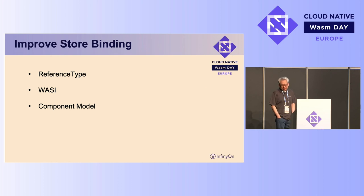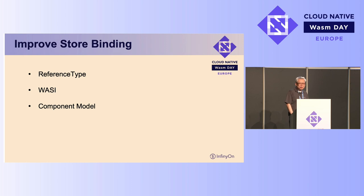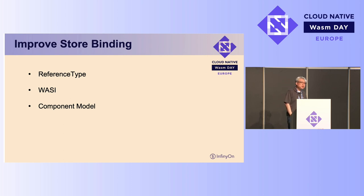As you can see, the current store binding is done in a very simplistic manner. We are looking into using new capabilities of WebAssembly, such as reference types, WASI, and the component model, to process these records and streams in a much more efficient manner. This will allow us to sort of achieve zero-cost stream processing and to efficiently process data over the network in a more efficient way.